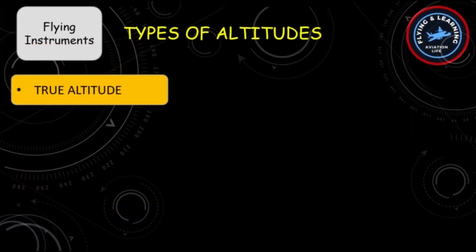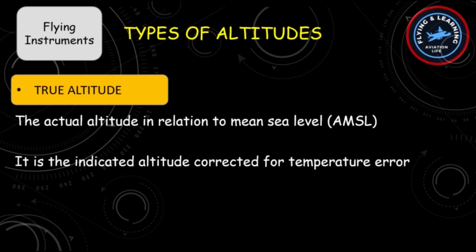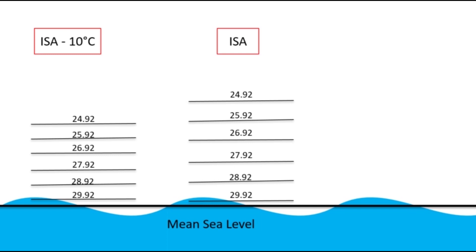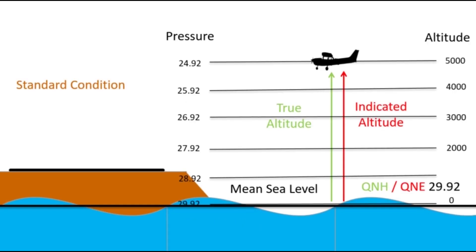The next type of altitude is true altitude. It is the actual altitude in relation to mean sea level, or in other words, it is the indicated altitude corrected for temperature error. This depiction shows the spacing of isobars under standard temperature conditions. If temperature falls, pressure change occurs more rapidly with altitude and the isobars are less spaced. On the other hand, if temperature increases above the standard value, the isobars expand. The pressure is the same at sea level in all three cases, but only the pressure distribution changes with altitude. In standard conditions, true altitude equals indicated altitude.